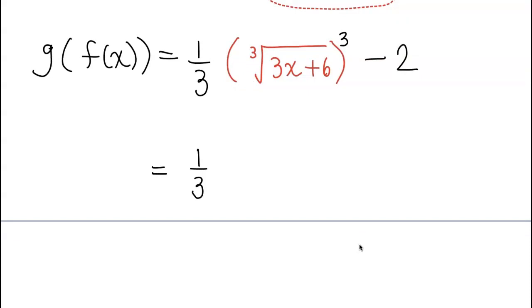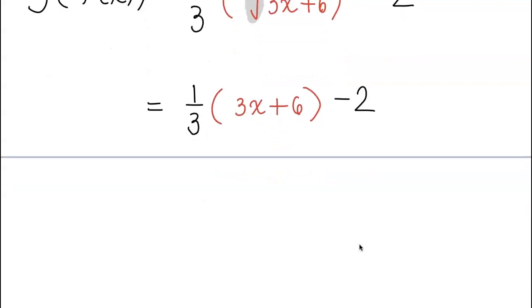Those will cancel right out, so I will have 3x plus 6 left in the parenthesis and minus 2 outside. All right, let's distribute that third in.